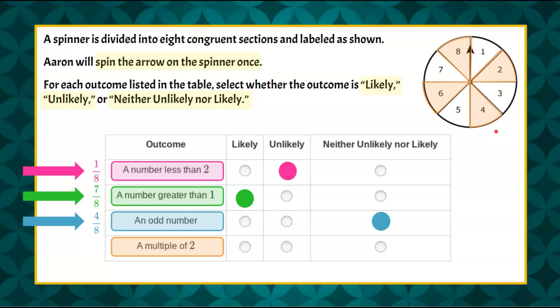So we can see that a multiple of two is really just an even number. So we have two, four, six, and eight. None of these other factors - one, three, five, and seven - are not divisible by two. So therefore, they're not a multiple of two. So we can see we have four of our eight sections, again, that are a multiple of two, giving us again that fifty-fifty chance. It's neither likely or unlikely, so that's the box we're going to pick.